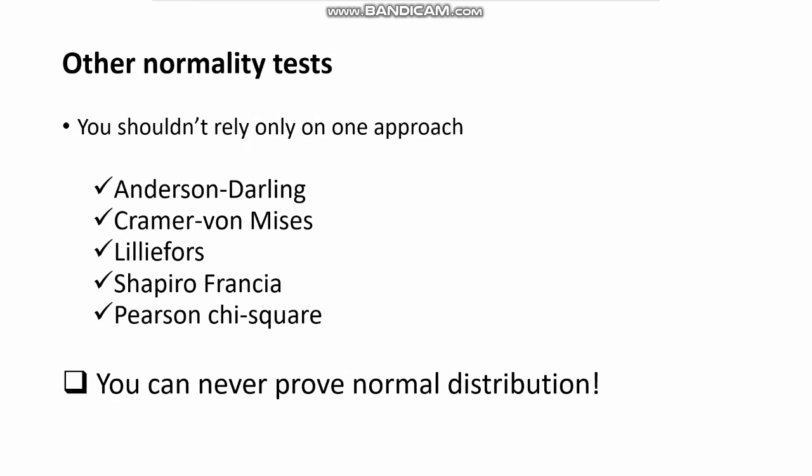You should use a combination of visual techniques like qqplots or density curves, and multiple statistical tests. Other widely used normality tests in R include Anderson-Darling, Cramér-von Mises, Lilliefors, Shapiro-Francia, and Pearson chi-square. For all of these tests, the null hypothesis states the distribution is normal, so we need to fail to reject it.